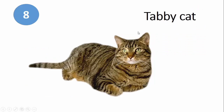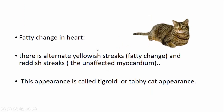The eighth one is the tabby cat, which has alternate dark and light bands similar to a tiger. This appearance is seen in fatty change in the heart, where there are alternate yellowish and reddish streaks. The yellow streaks are due to fatty change, and the reddish streaks represent the unaffected myocardium. This alternate yellowish and reddish pattern gives the tabby cat appearance, sometimes also called tigroid appearance.